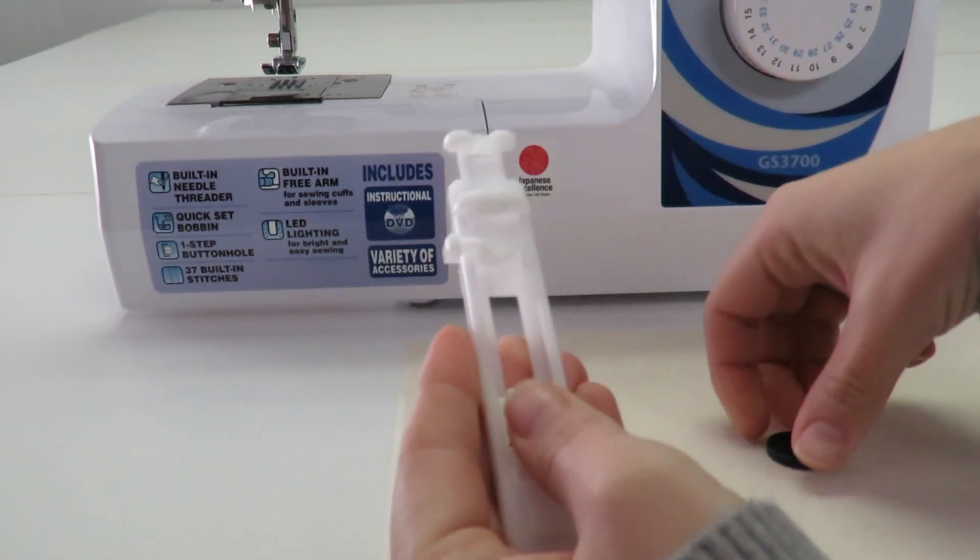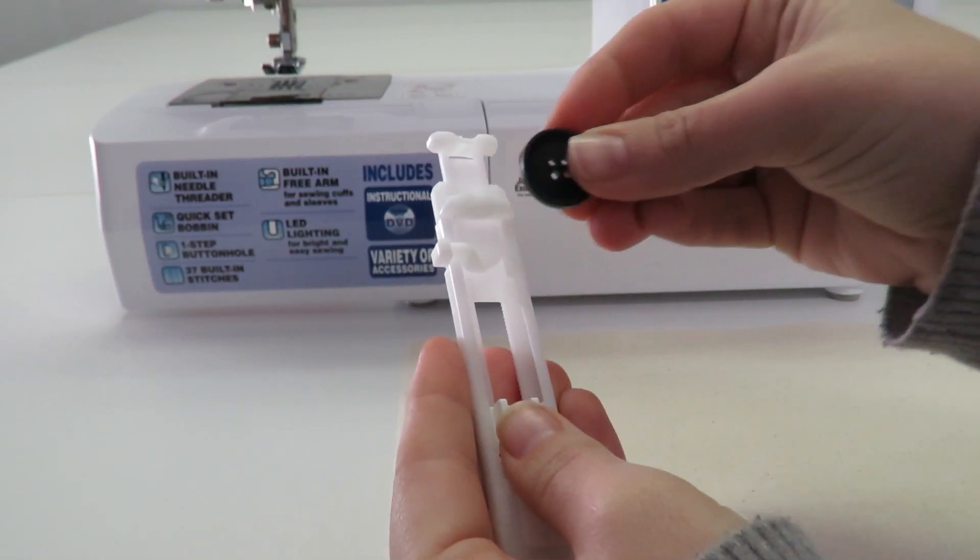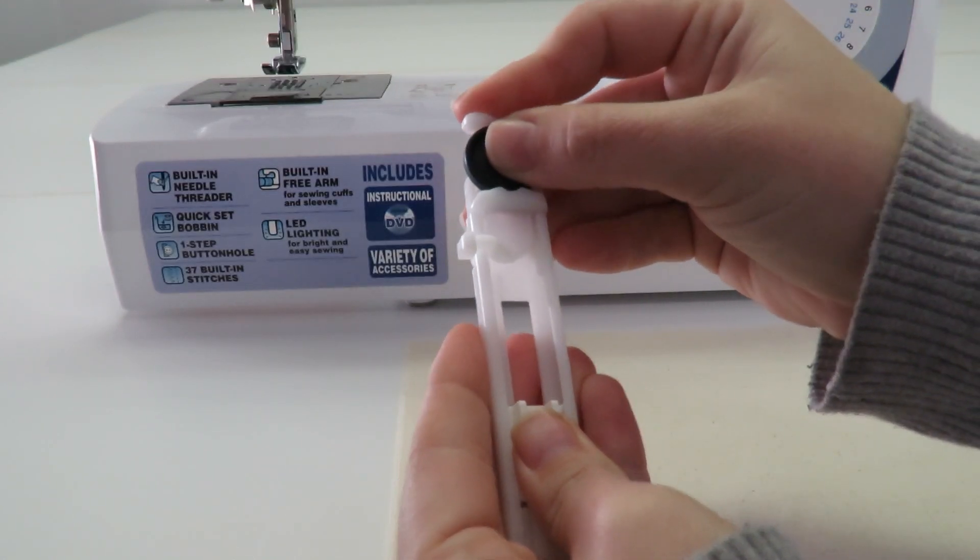Insert your button at the back of the buttonhole foot and attach it to the machine by snapping it onto the shank.